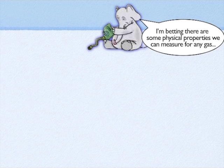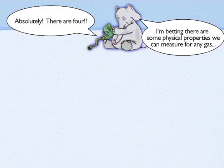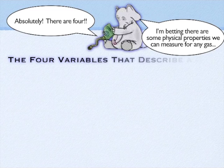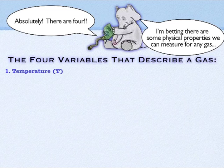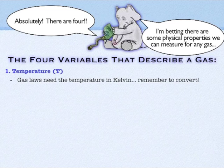We can talk about some of the variables we can measure for any gas. For the rest of the unit, you're going to see these brought up again and again in all the different laws. Temperature is important for gases — we measure temperature in the Kelvin system. You must remember to do that; you cannot measure temperature in anything else.